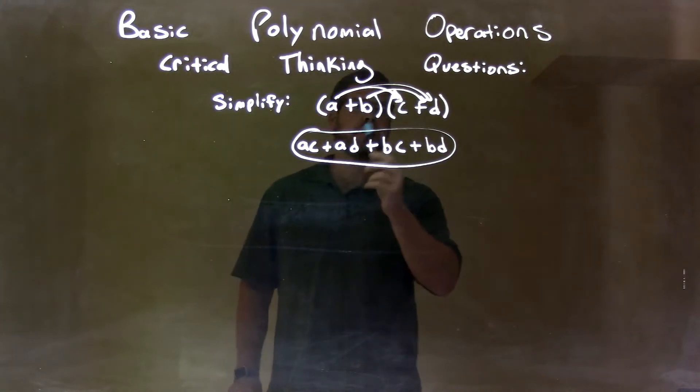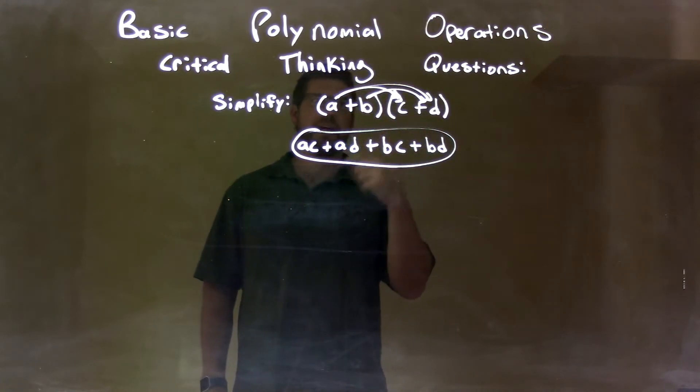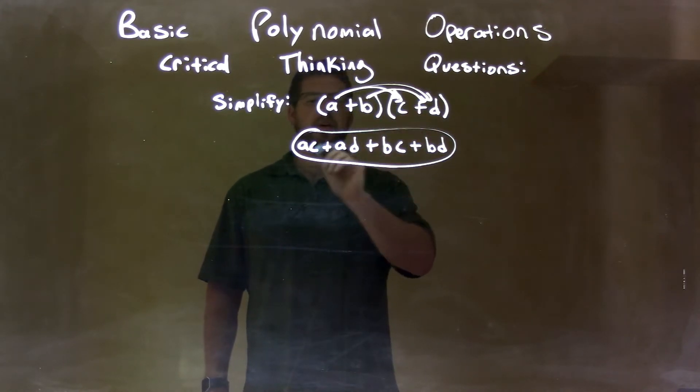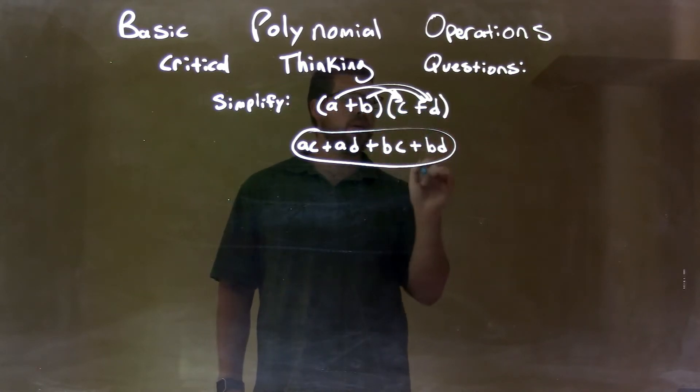Here, we're given (a + b)(c + d). Those are all variables, right? So we treat it just like anything else: all parts of my first parenthesis by all parts of my second parenthesis. a times c is ac, a times d is ad, b times c is bc, and b times d is bd.